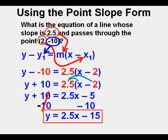We're left with y equals 2.5x minus 15, an equation in slope-intercept form that we should be able to quite easily graph.